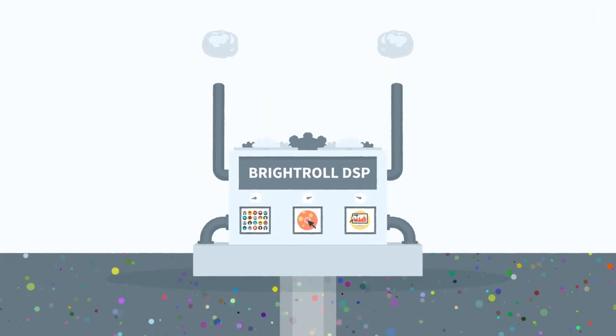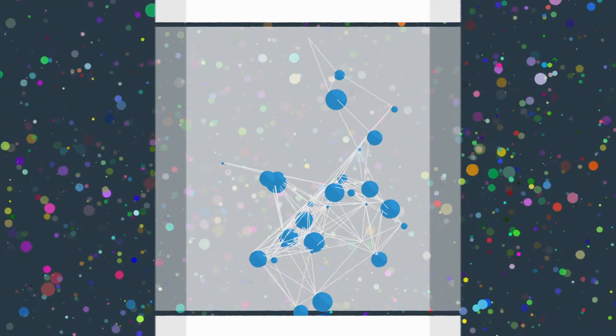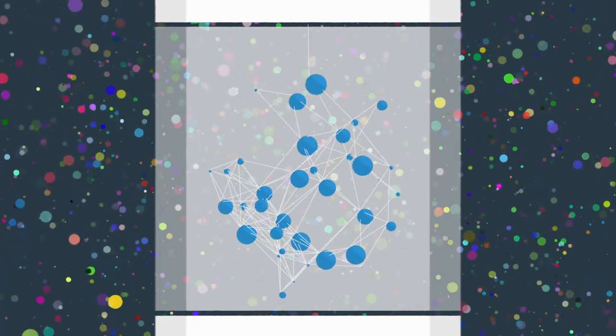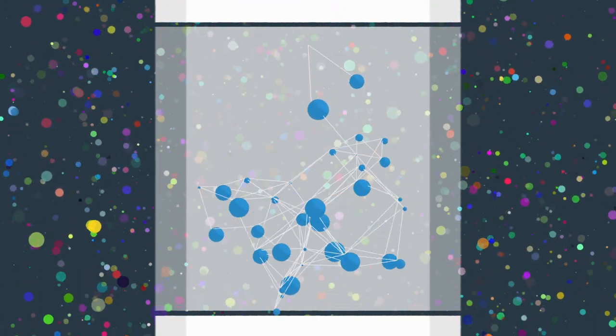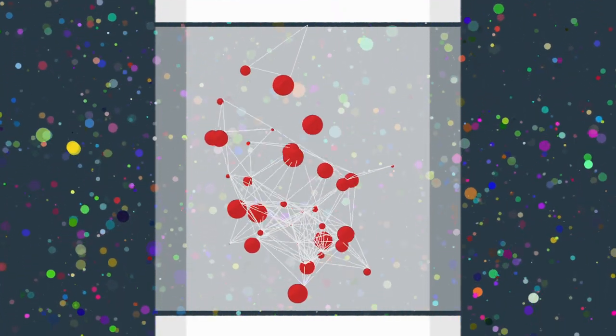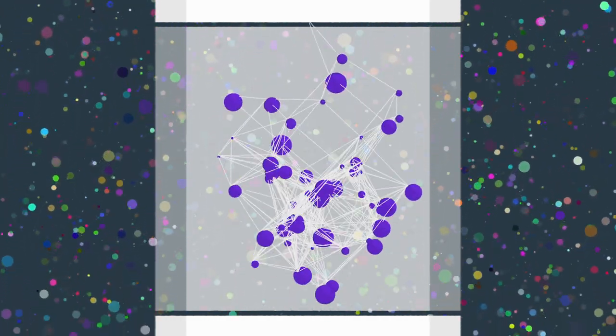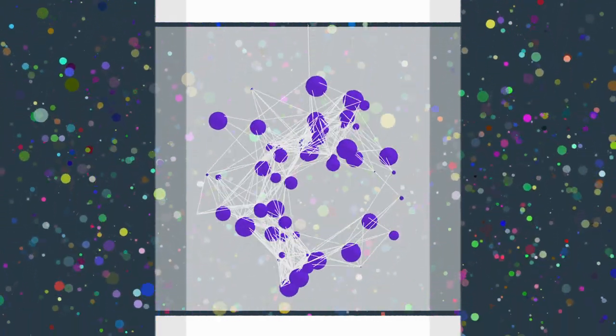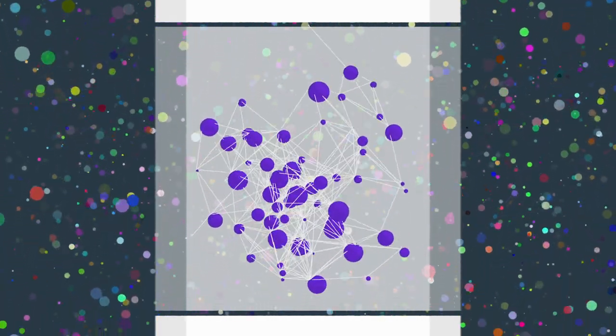With over 30 billion data points collected each day, you can target your ads using your own data, third-party data, or Yahoo's vast audience data, which is unique to the BrightRoll DSP.